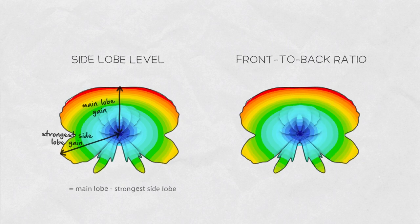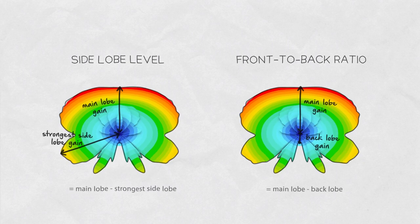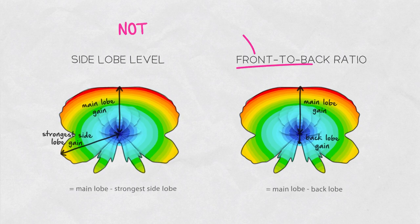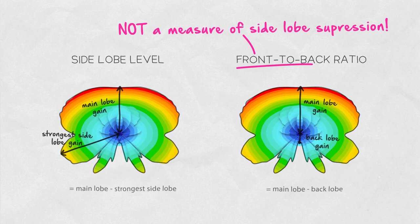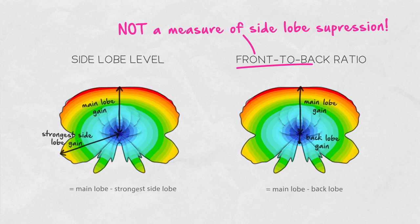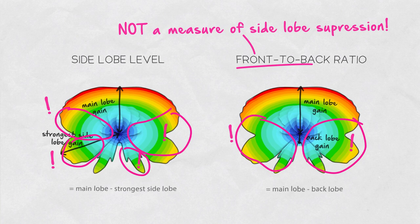Front-to-back ratio is a difference between the gain of the main lobe and the back lobe. Most antenna manufacturers often misuse front-to-back ratio as the measure of side lobe suppression, while it only gives information about the gain of the back lobe. It says nothing about the rest of the side lobes an antenna might have.